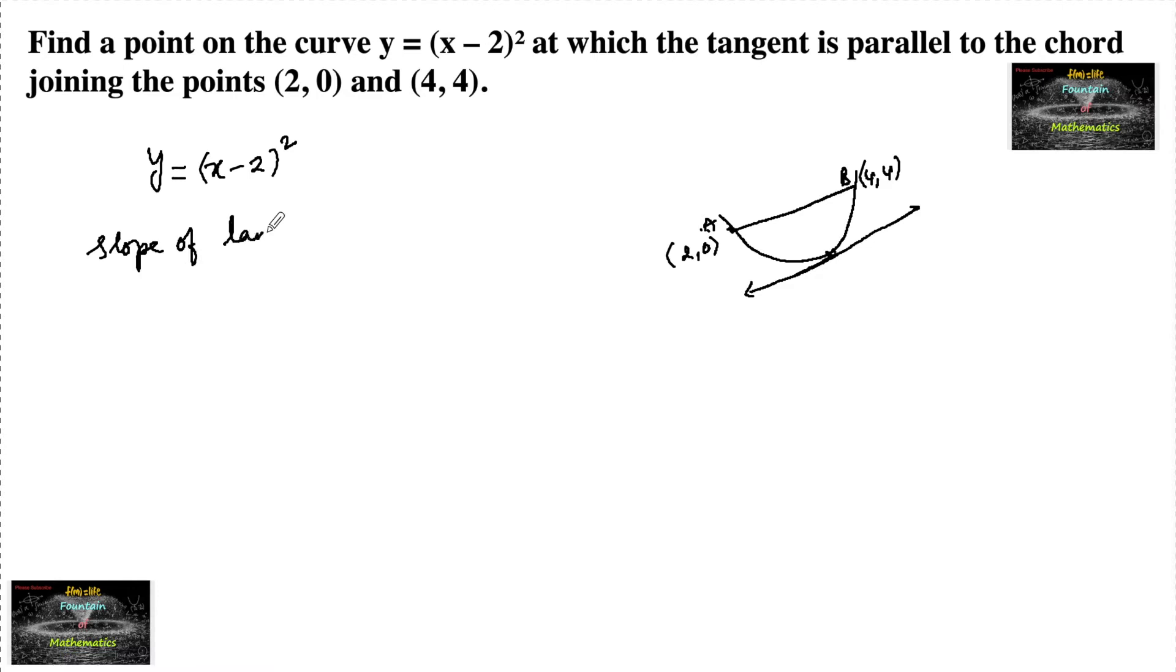Slope of tangent to the curve at a point is equal to slope of chord. Slope of chord joining two points A (2, 0) and B (4, 4) equals 4 minus 0 upon 4 minus 2. That's 4 upon 2 is 2.